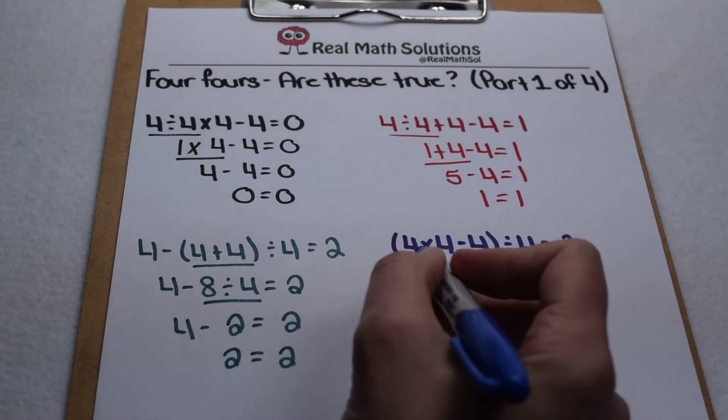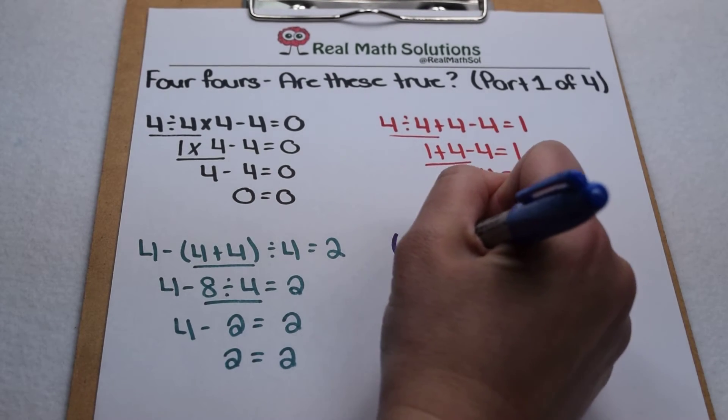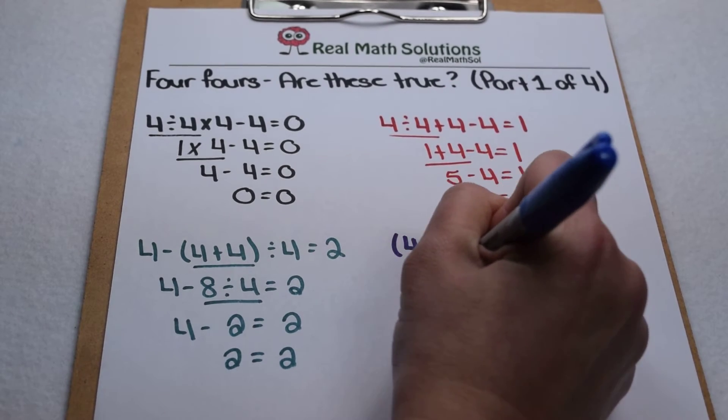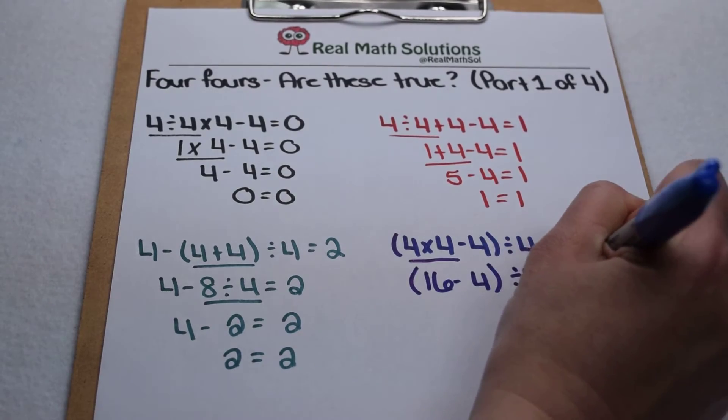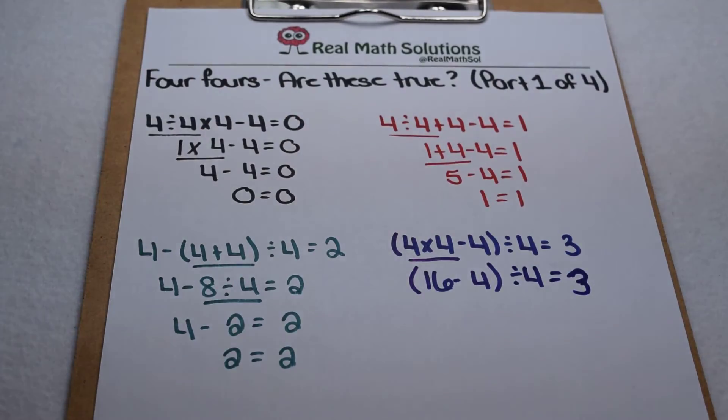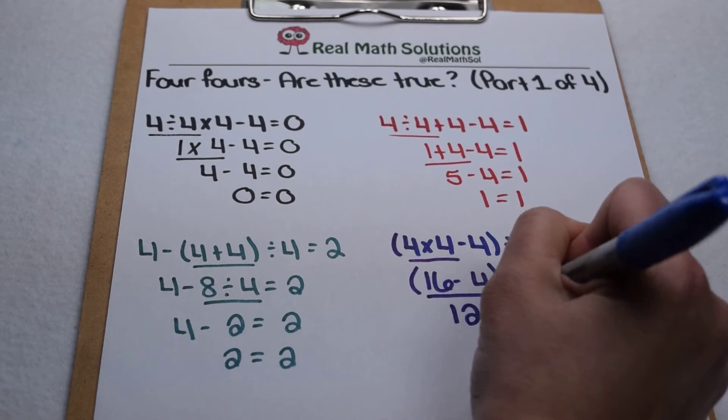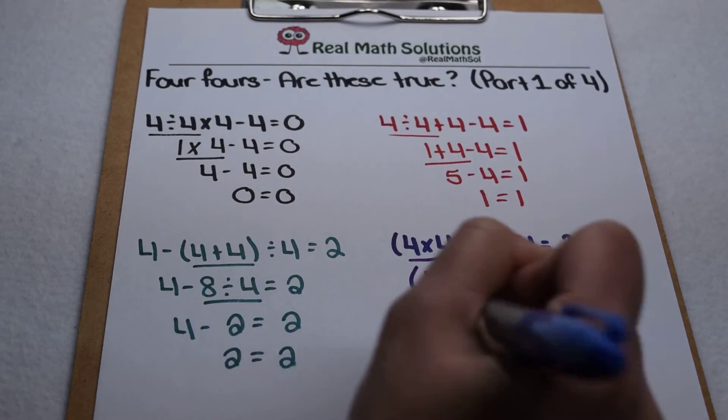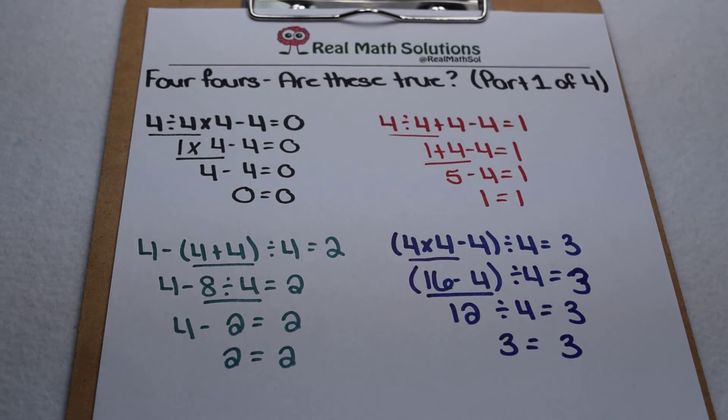Our last one we're going to check today, we need to start inside our parentheses. Inside our parentheses multiplication comes before subtraction. So that leaves us with sixteen minus four in our parentheses divided by four. Then we need to do the sixteen minus four because that's still inside our parentheses. That leaves us with twelve divided by four. Twelve divided by four is three, and three does equal three. So that one works. The first four in this series works.